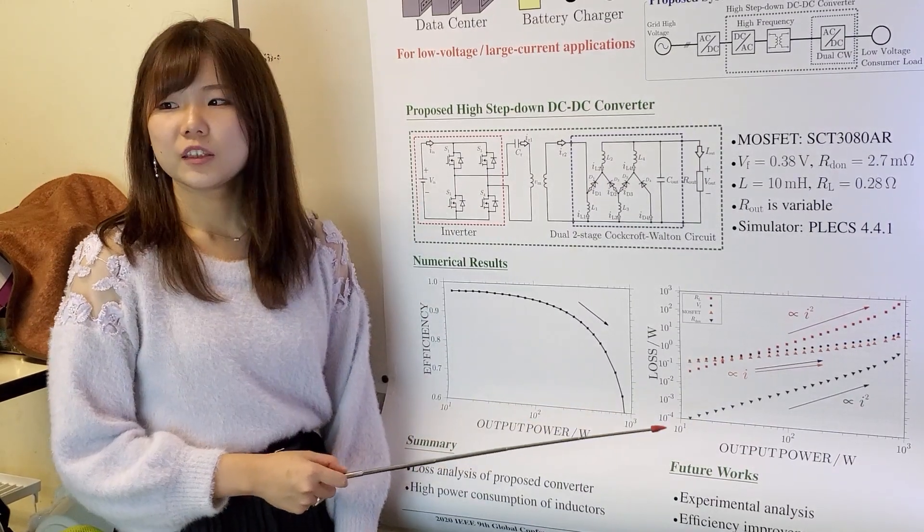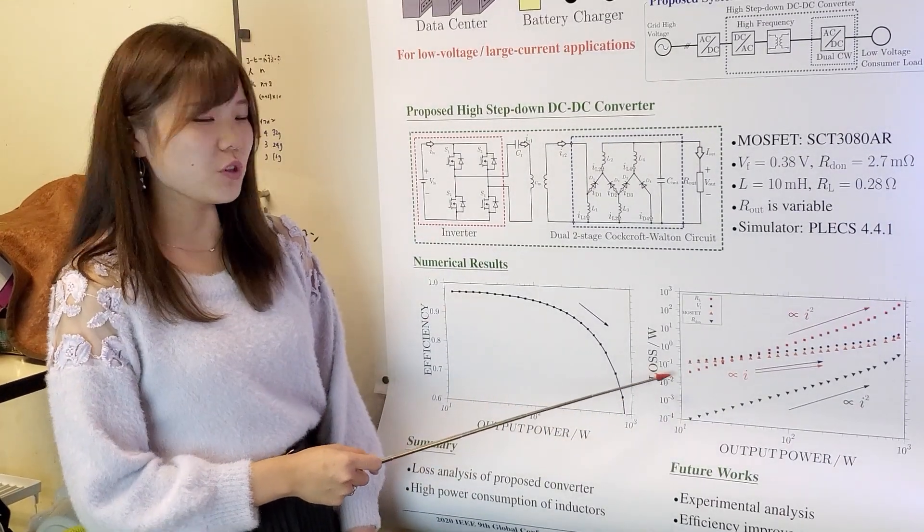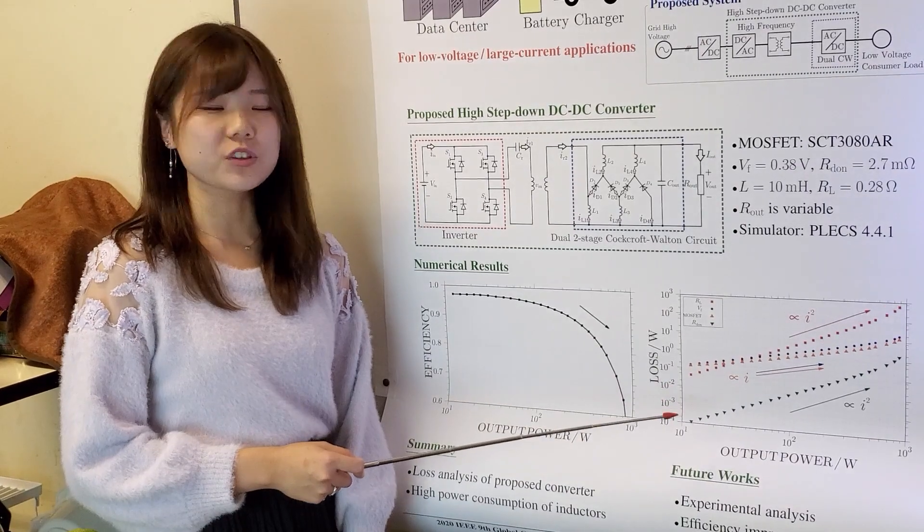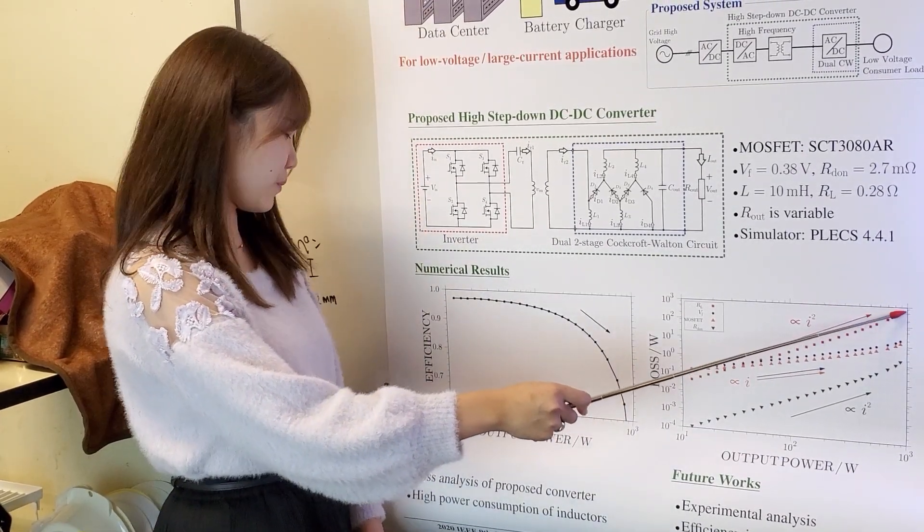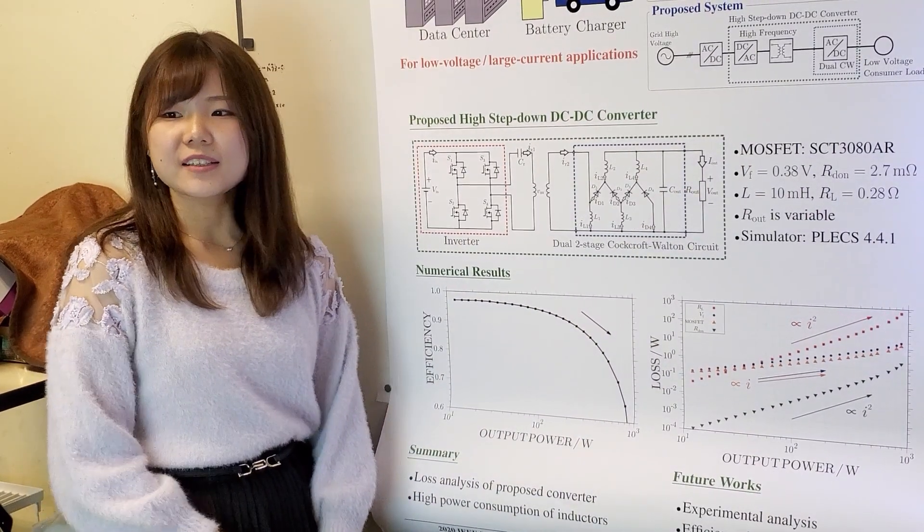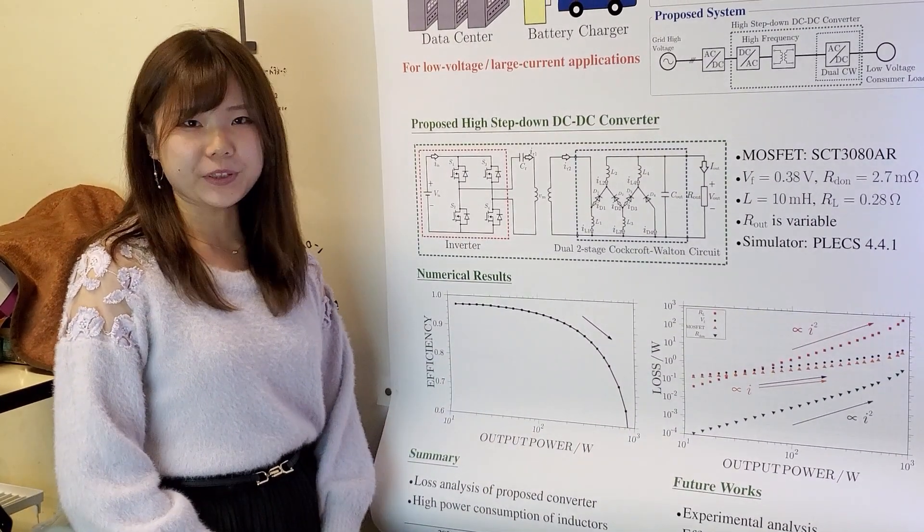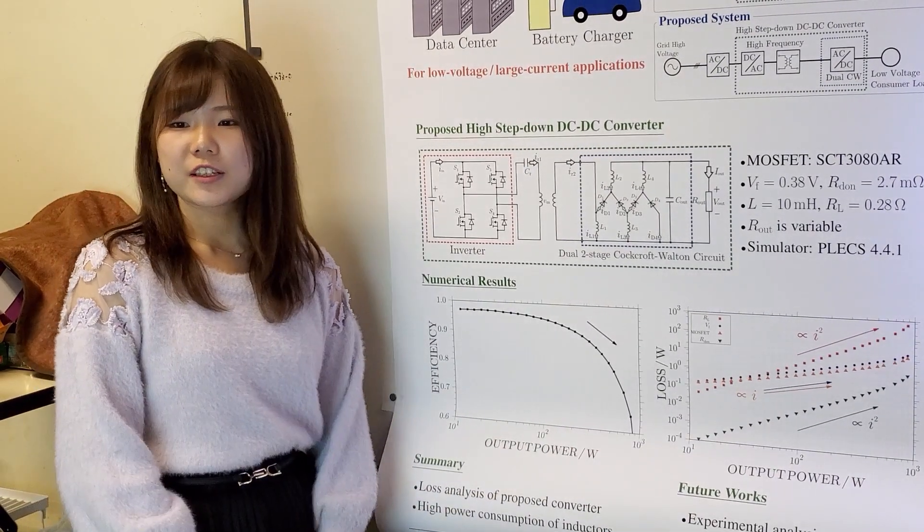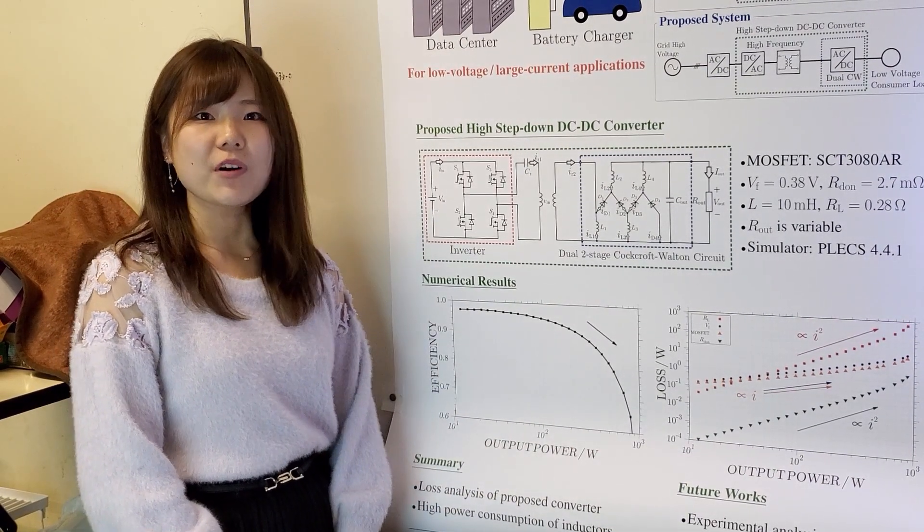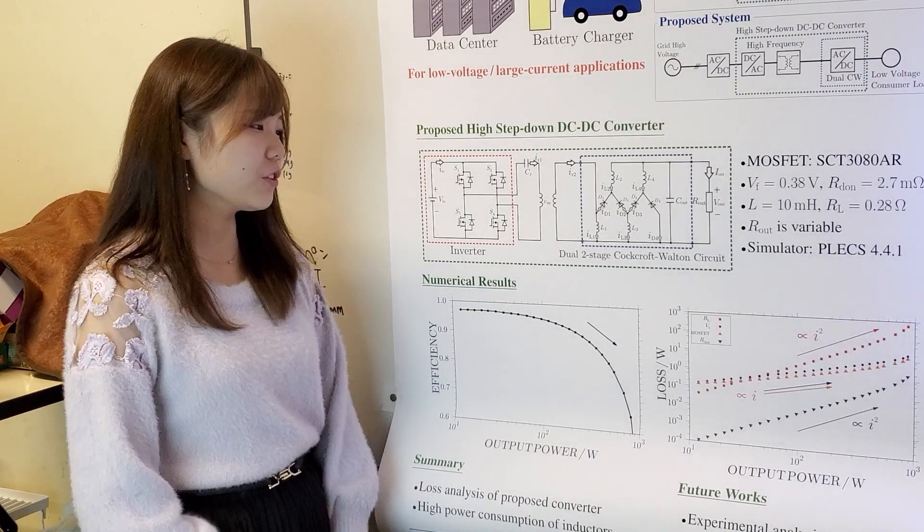From this graph, we can conclude that most of the loss is caused by internal resistance of inductors. In conclusion, we analyze the loss of this proposed converter. As a result, it is clarified that the highest power consumption is due to inductors.